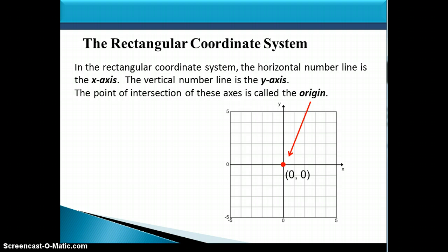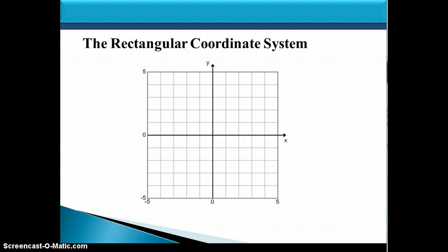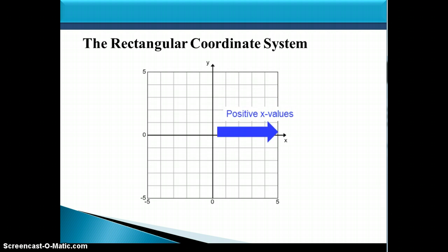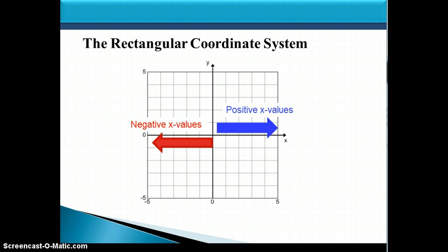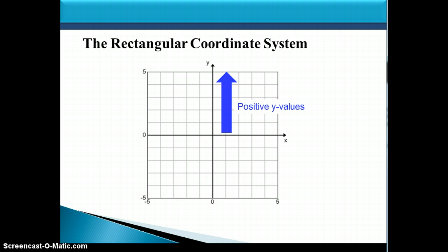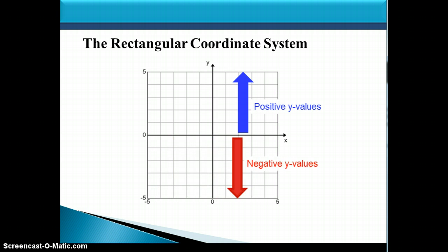An ordered pair is the way that you can label or name a point on the rectangular coordinate system. The first number is always the x-coordinate, and the second number is always the y-coordinate. Every point to the right of the y-axis has positive x values, and every point to the left of the y-axis has negative x values. Every point above the x-axis will have positive y values, and below the x-axis, those points all have negative y values.